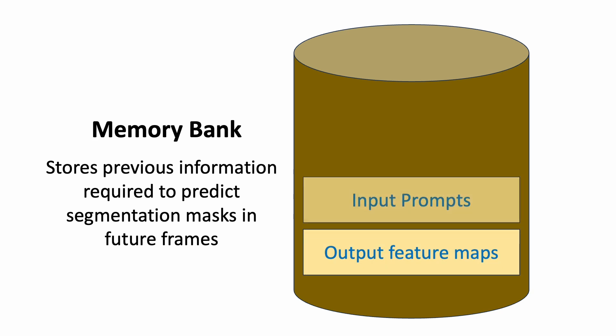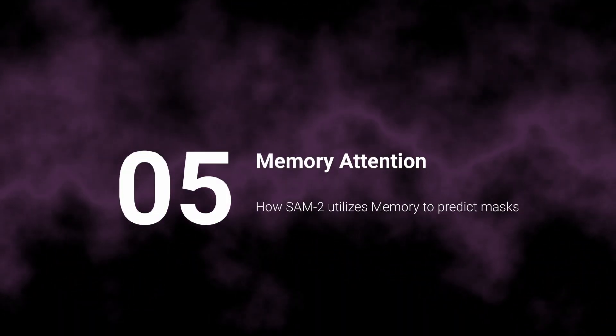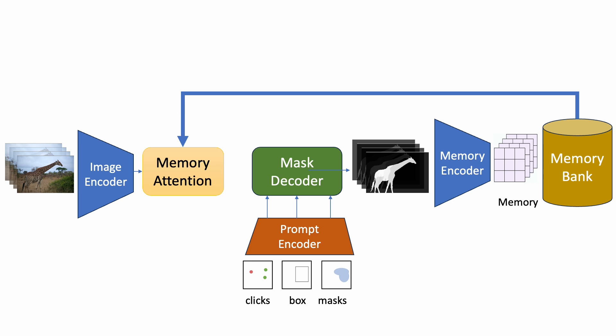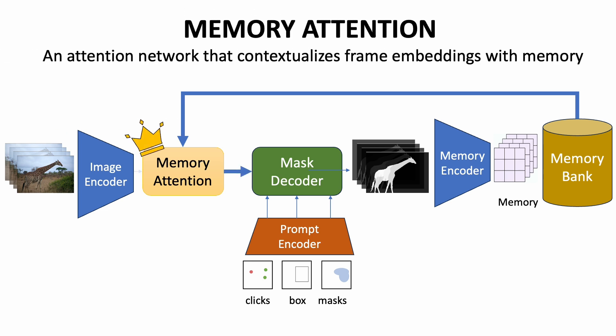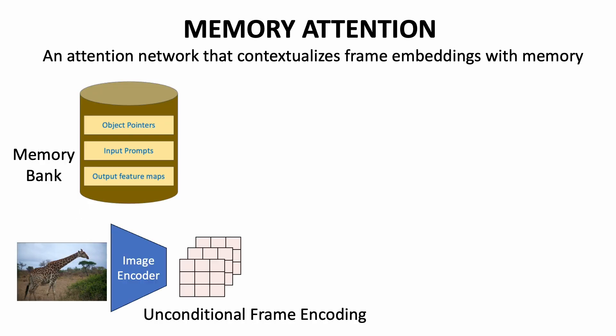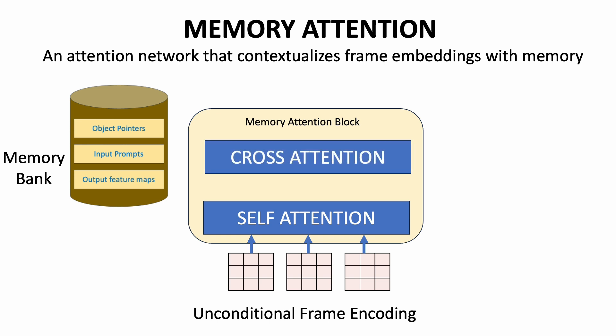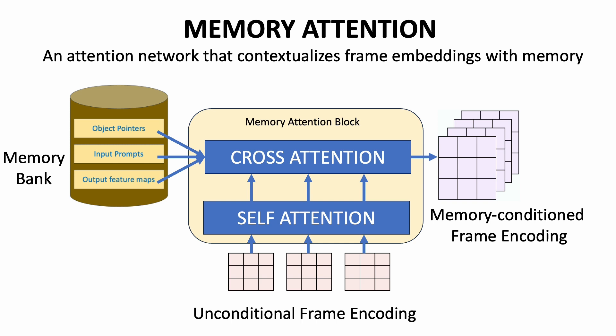With the memory bank in place, the mask decoder needs to produce masks contextualized with stored information, and this is achieved using memory attention. The memory attention block conditions the current frame features on past frame features and predictions from the memory bank. It is introduced between the frame encoder and the mask decoder. It first performs self-attention on the current frame embeddings, then cross-attention between the image embeddings and the memory bank contents — contextualizing the image embeddings with previous output masks, previous input prompts, and the object pointers.